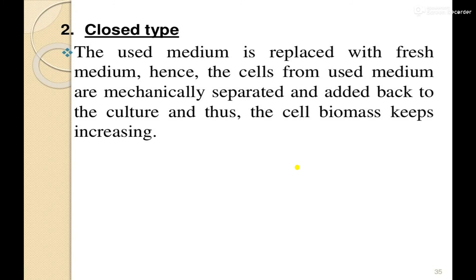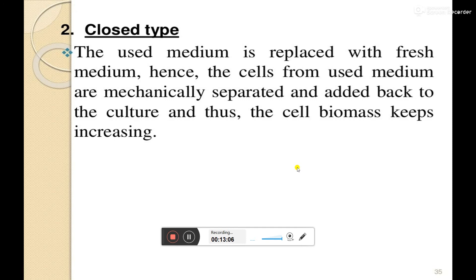Closed type continuous culture: the used medium is replaced with fresh medium. The cells from the used medium are mechanically separated and added back to the culture, and thus the cell biomass keeps increasing. These are all the cultures depending upon the types of medium.